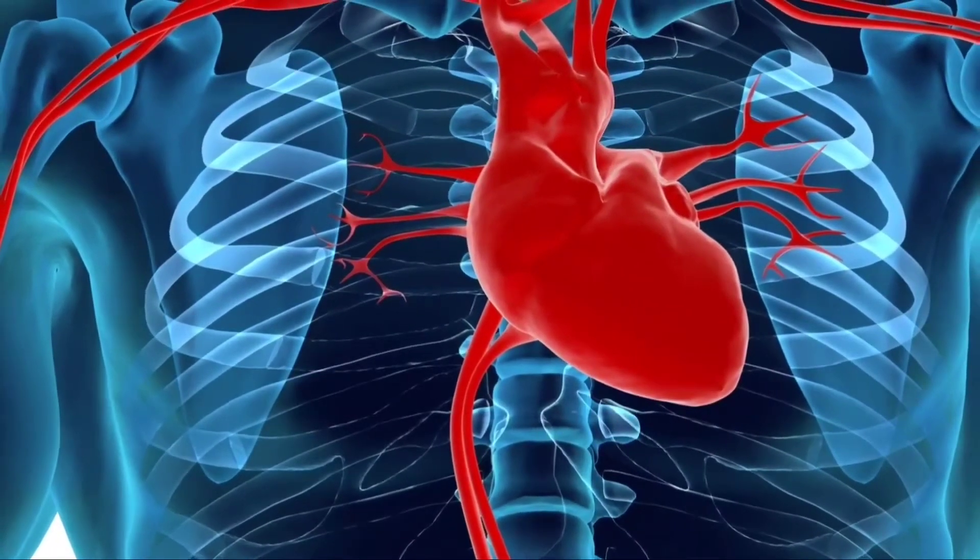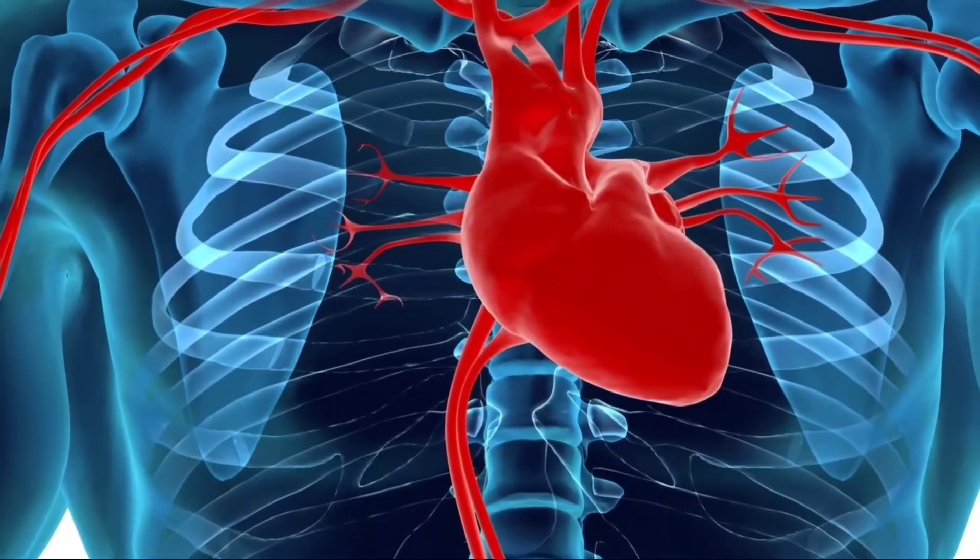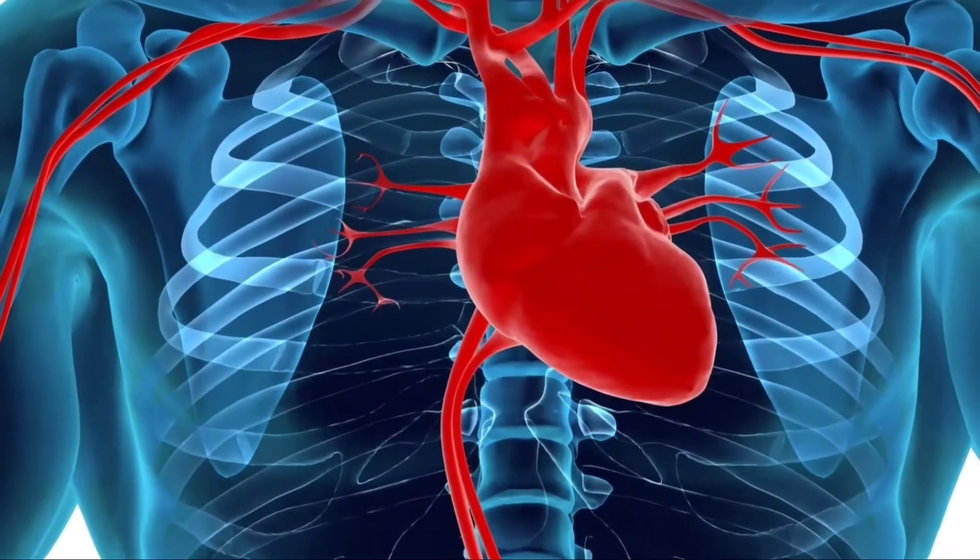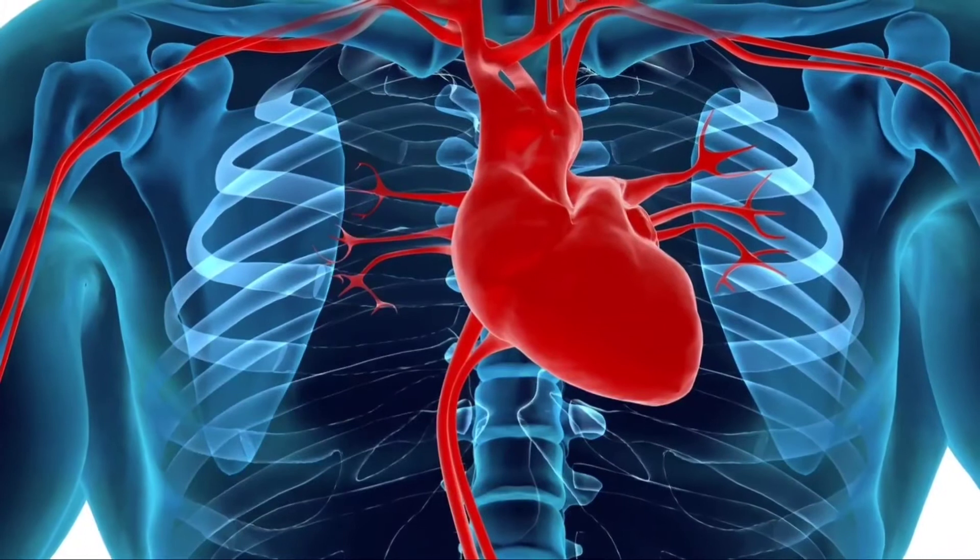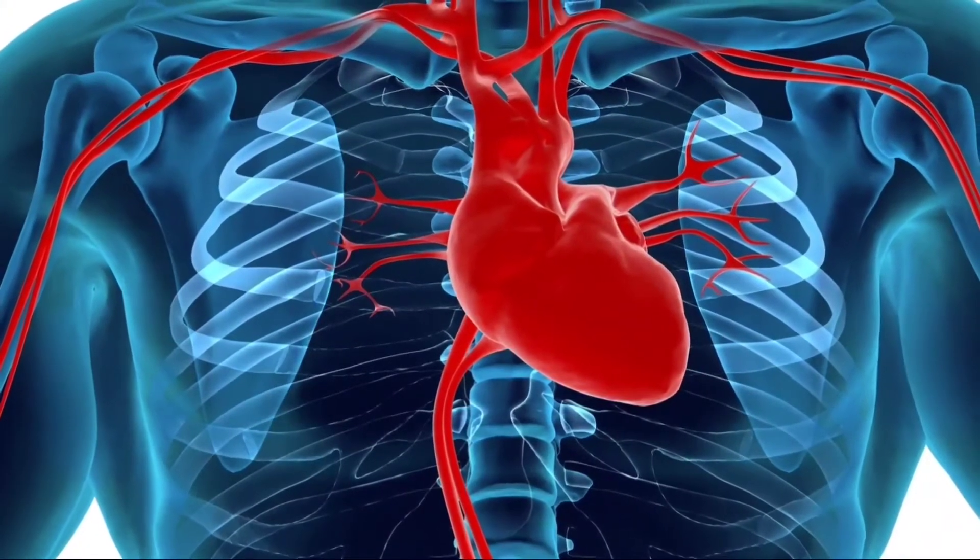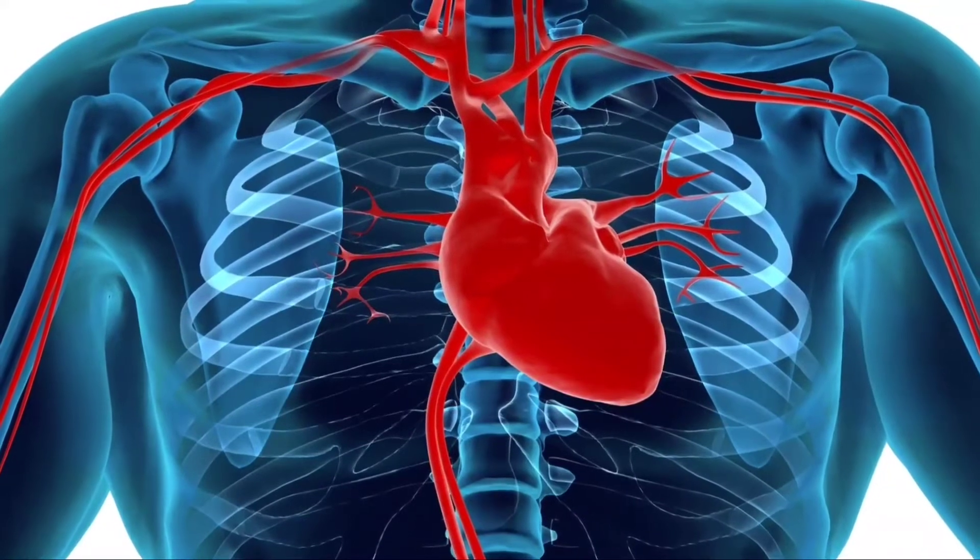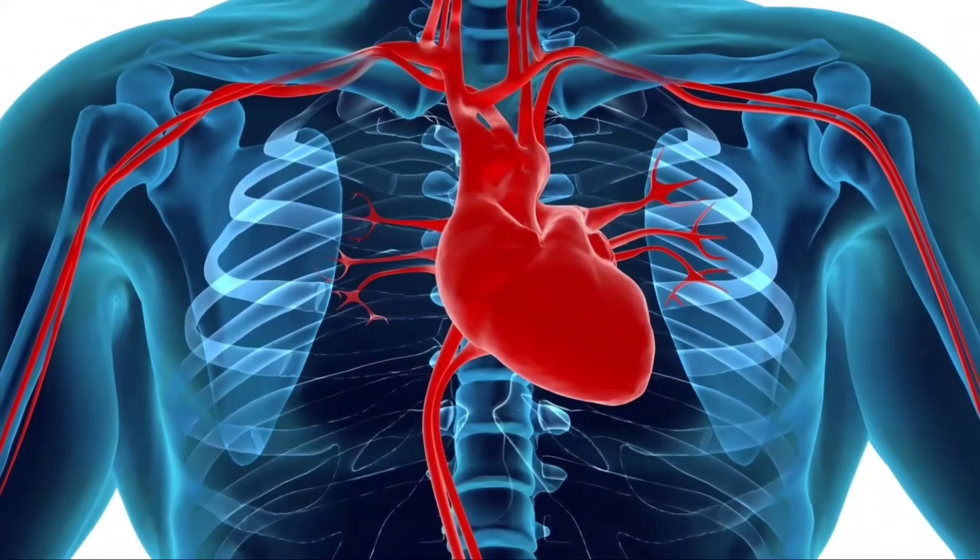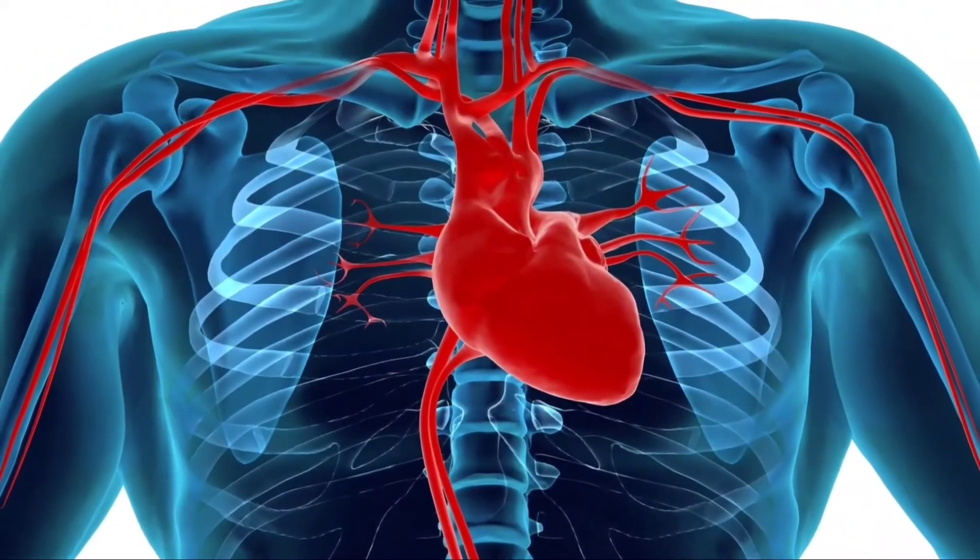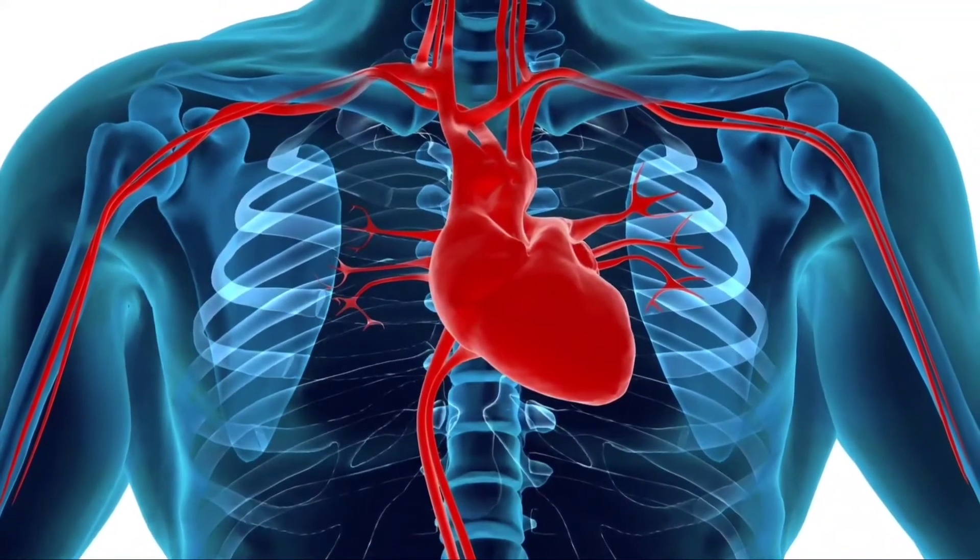Your heart is located between your lungs in the middle of your chest, behind and slightly to the left of the sternum. A double-layered membrane called the pericardium surrounds your heart like a sack. The outer layer of the pericardium surrounds the roots of your heart's major blood vessels and is attached by ligaments to your spinal column, diaphragm, and other parts of your body.